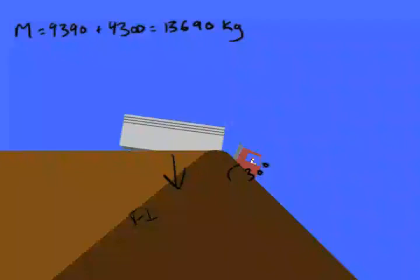Now the force perpendicular equals the force of gravity. Now the force of gravity is Fg times the cosine of the degree. Now Fg is mass times acceleration, so we'll take our mass, times it by 10, times that by the cosine of 30 degrees, which is 0.866, and we'll get a force perpendicular of 118,555.4 newtons.